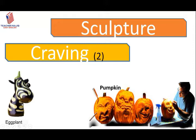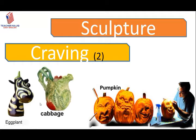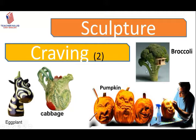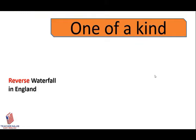Look here — it's eggplants, a vegetable. They turned the eggplants into an animal. Here we have a cabbage, and look — broccoli was sculpted into a tree and a house. Great examples of sculpting! So sculptor, sculpting — and that is also the second meaning of craving: to carve.